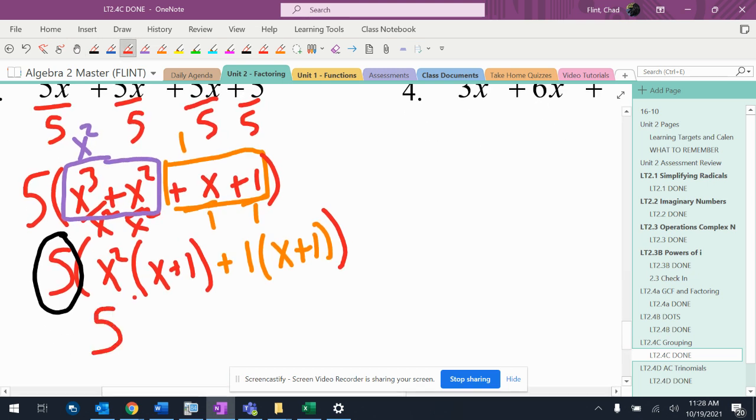So I have 5 and then parentheses. Now I'm going to factor this thing. It has (x + 1) and it has (x² + 1).